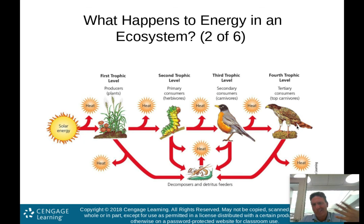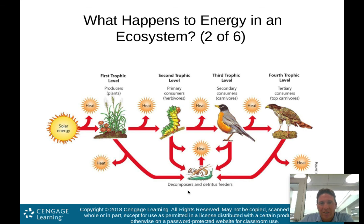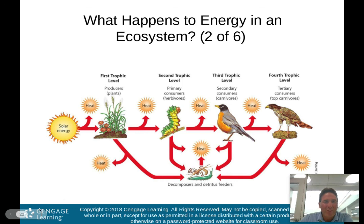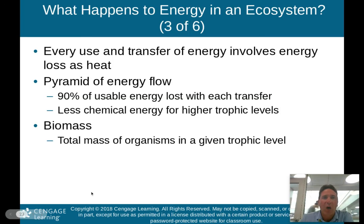Here we have a hawk, humans, sharks — things that would be considered tertiary consumers. And of course we have our decomposers and detritus feeders that take the waste. As these things die — be it plants, primary, secondary, or tertiary consumers — the decomposers take that organic matter and decompose it into nutrients needed to continue this cycle.